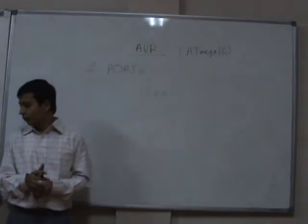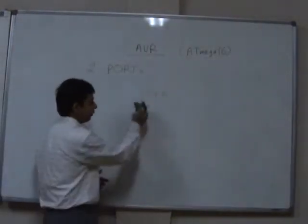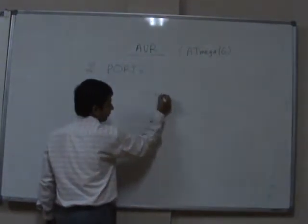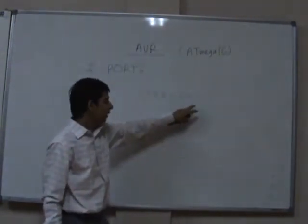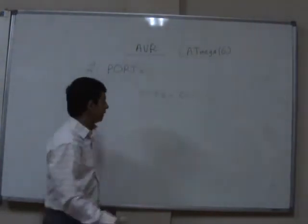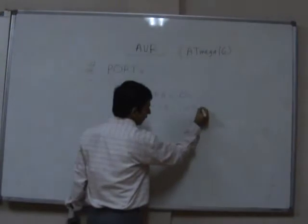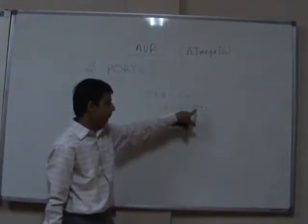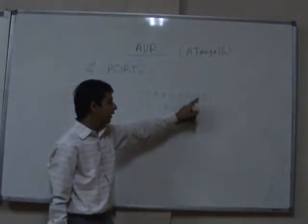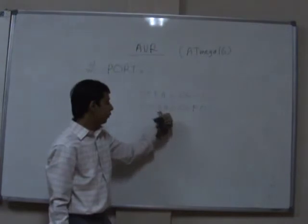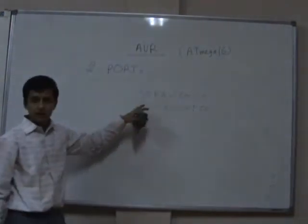Third example: we want to make the lower nibble of port A as output and the higher nibble as input with pull-ups enabled. Write DDRA = 0x0F — this makes the lower nibble output and the higher nibble input. Then write PORTA = 0xF0 to make the higher input nibble pull-up. With this configuration, you can then read data from the upper nibble.